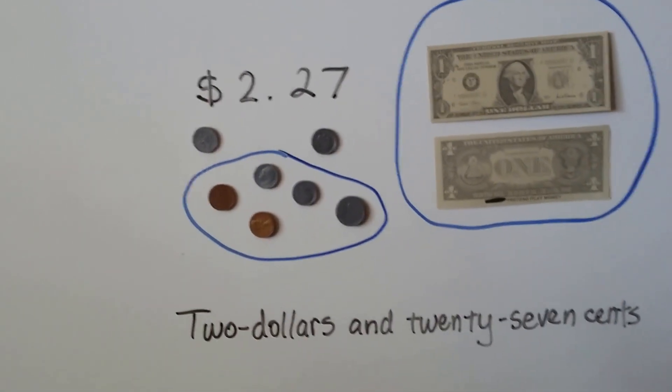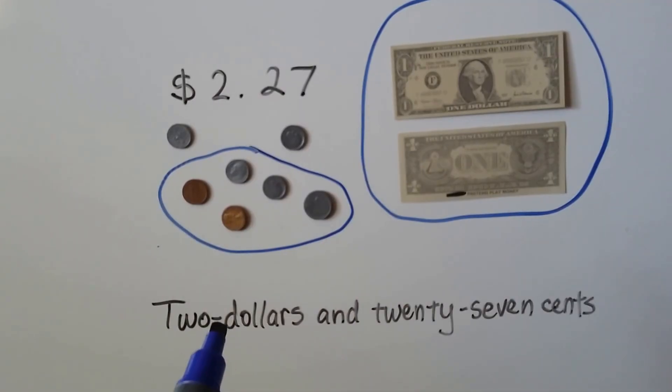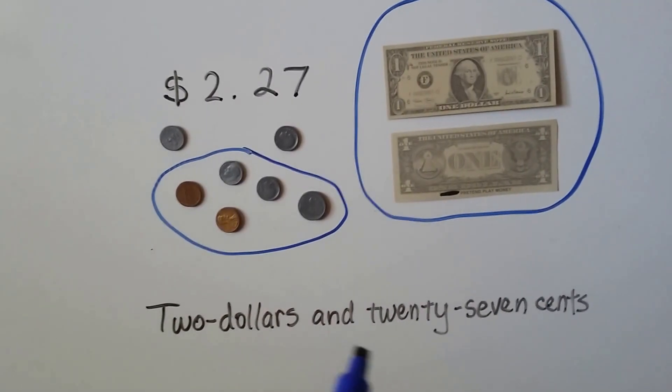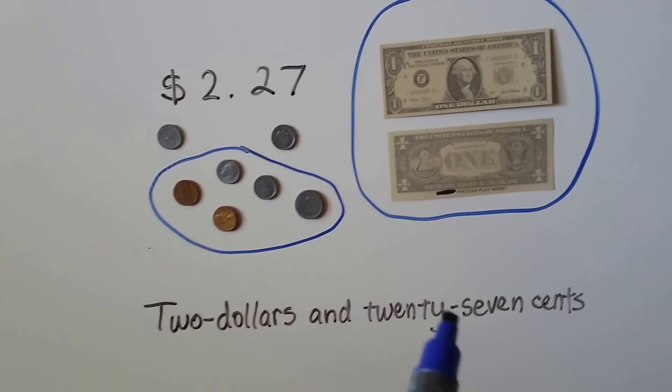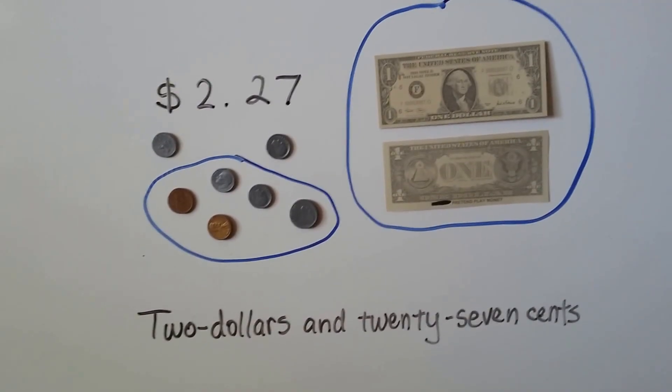If we wrote it with words, we would write 2 dollars with a hyphen in between it, right here, and 27, that's the decimal point, the and, 27, and there's a hyphen in between 20 and 7 cents. 2 dollars and 27 cents.